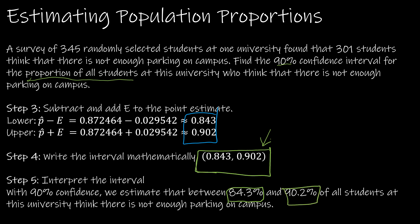Notice when I wrote my interpretation, I'm saying with 90% confidence we estimate that between 84.3 percent and 90.2 percent. Even though when I write my interval I write it like this as a decimal, when I'm writing my interpretation I'm going to actually use it as a percentage.